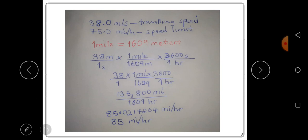then you multiply by 3600 seconds over one hour. In one hour, there's 3600 seconds, so 3600 seconds is equivalent to one hour. This is what we have here. Then one mile is equivalent to 1609 meters. At this point